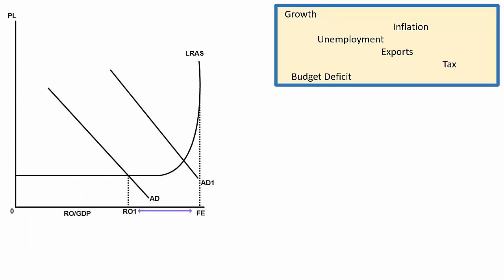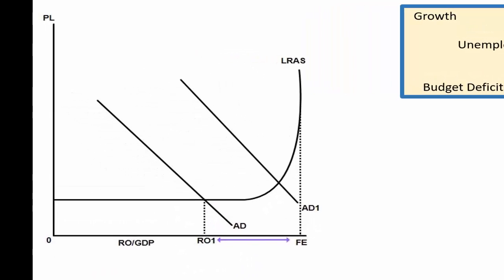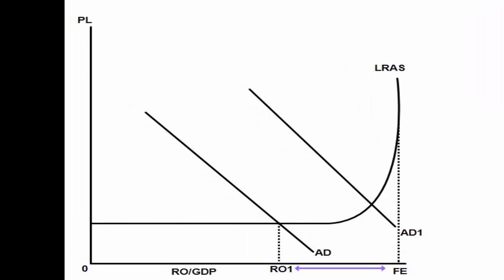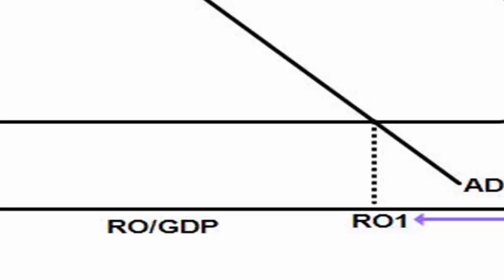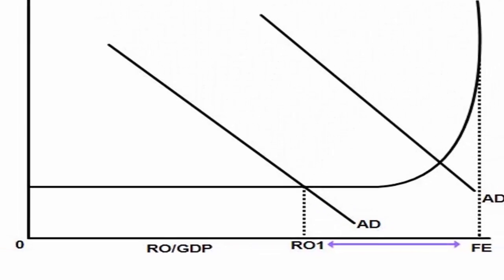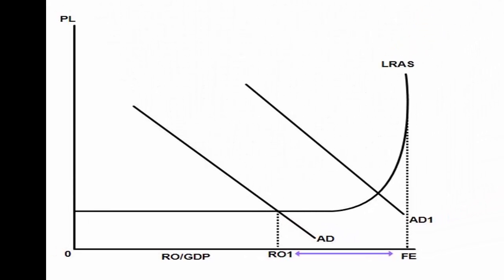Now a lot of these can be shown on this aggregate demand and aggregate supply graph that we looked at in the previous section of this video. So for example if we take growth you'll see that the x-axis along the bottom there is titled RO forward slash GDP and so GDP is growth. RO means real output which means the total amount of production in the economy. So that's how we measure growth.